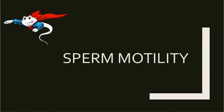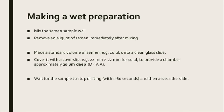Sperm motility. For examination of motility of sperm, we must make a wet preparation. Mix the sample well. Remove a small volume of semen immediately after mixing. Place 10 microlitre of liquefied semen on a glass slide and cover it with a 22×22 mm glass cover slip. Wait for the sample to stop drifting — that takes 60 seconds — then assess the slide.